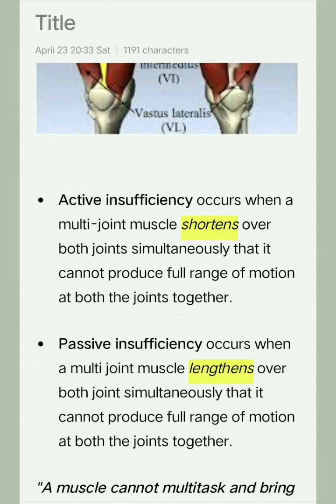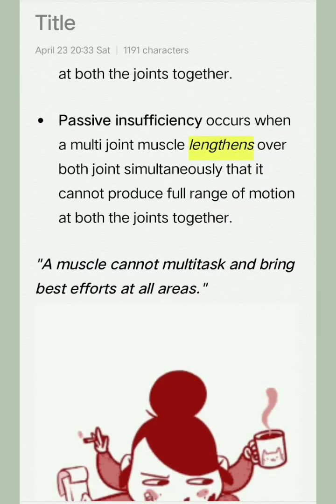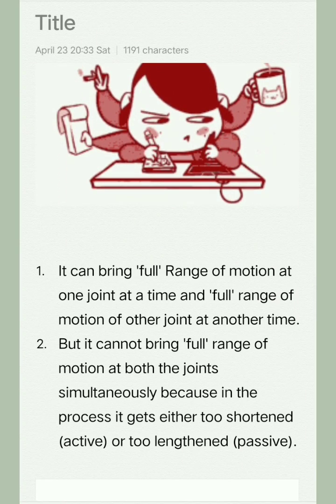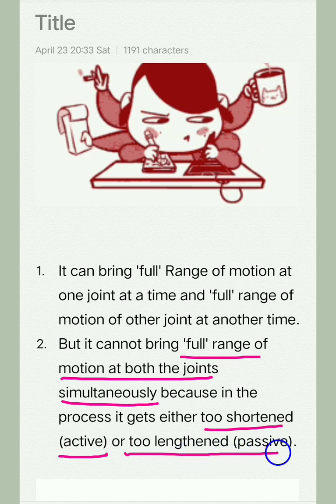To put it in simpler words, a muscle cannot multitask and bring its best effort at all areas simultaneously — just like humans. The muscle can bring full range of motion at one joint at a time, and full range of motion at the other joint at another time, but it cannot bring full range of motion at both joints simultaneously because in the process it gets either too shortened, as in active insufficiency, or too lengthened, as in passive insufficiency.